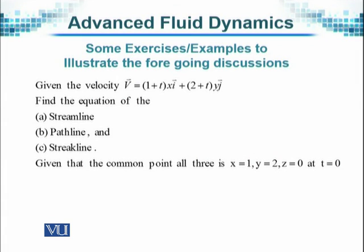Here is one more example. The question is, given the velocity vector V equals (1+t)xi + (2+t)yj, find the equation of the streamline, the pathline, and the streakline. These three things are different things, and it is given to us that a common point for all these three is x equal to 1, y equal to 2, and z is obviously equal to 0 at time t at the initial stage.